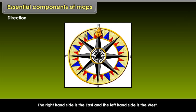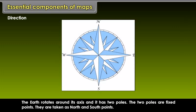The right-hand side is the east and the left-hand side is the west. The earth rotates around its axis and it has two poles. The two poles are fixed points. They are taken as north and south points.